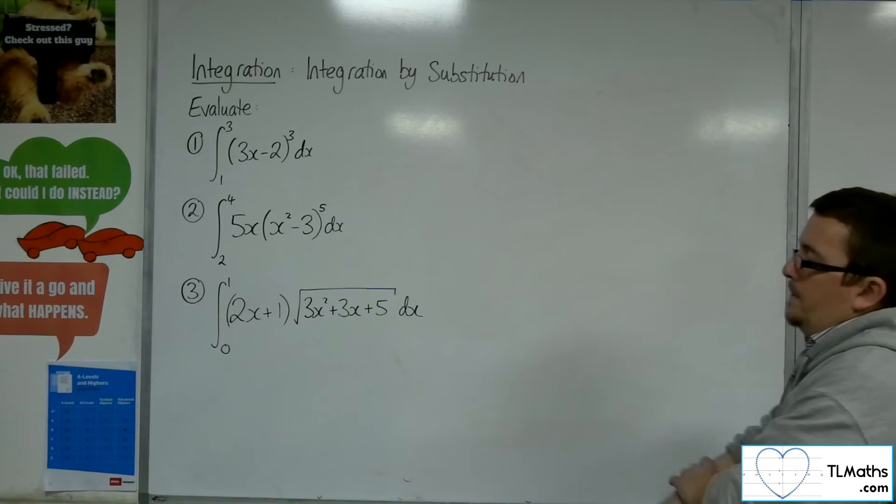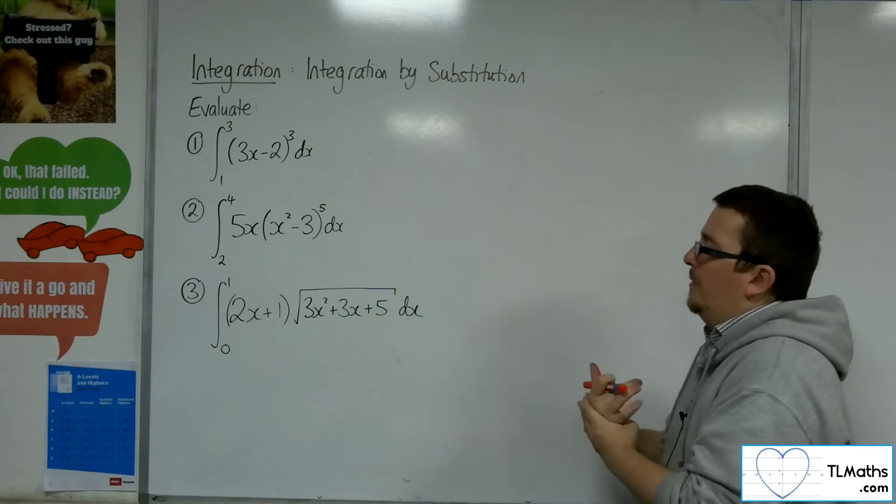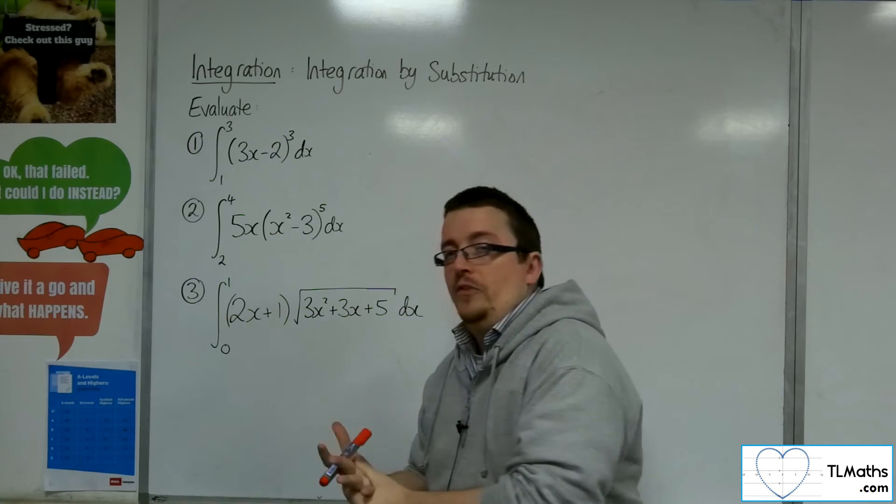So last one, number 3. We've got 2x plus 1 times the square root of 3x squared plus 3x plus 5, integrated between 0 and 1.